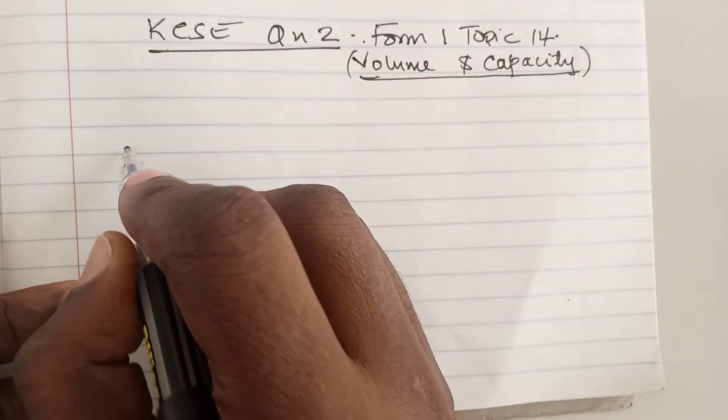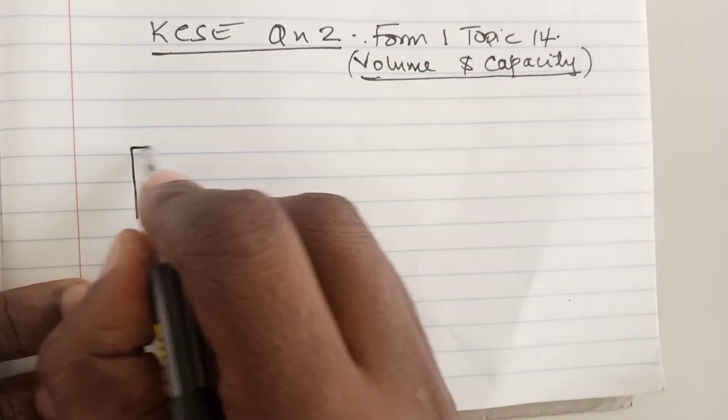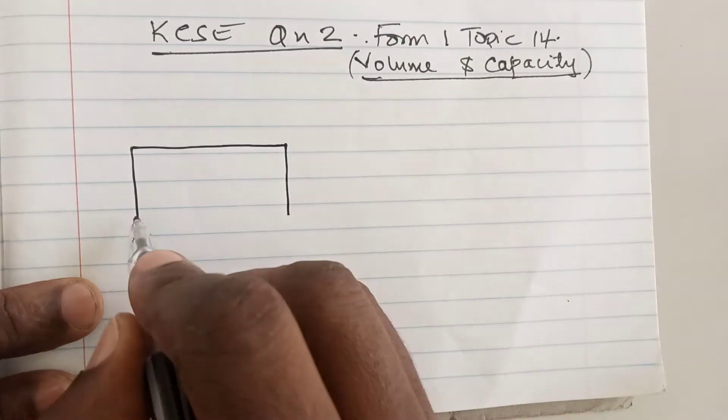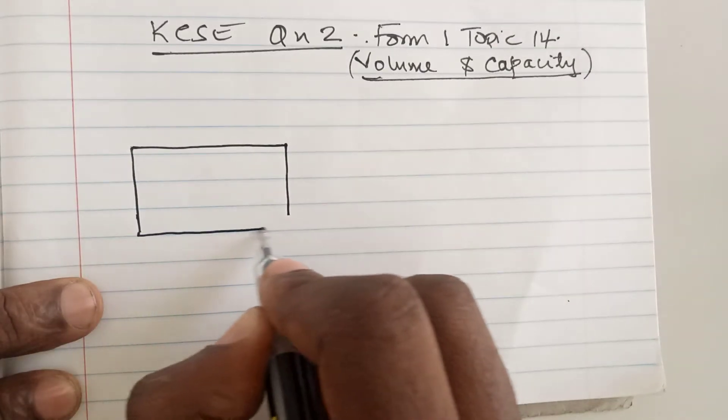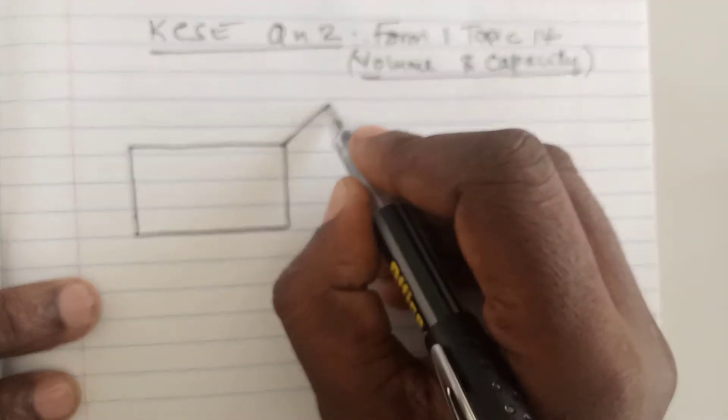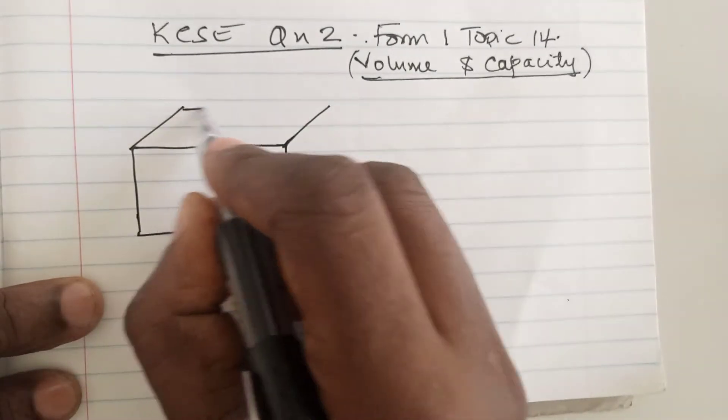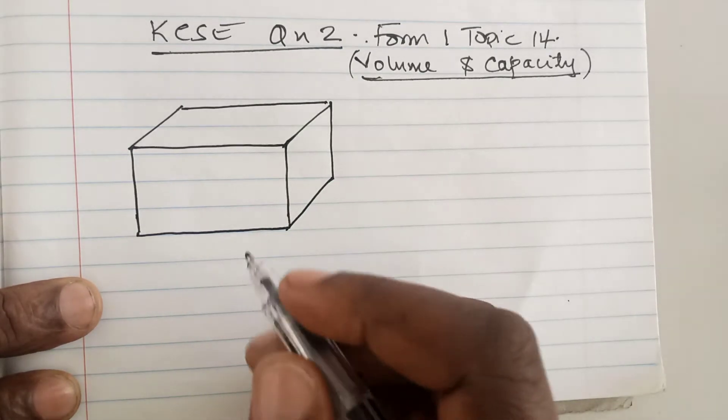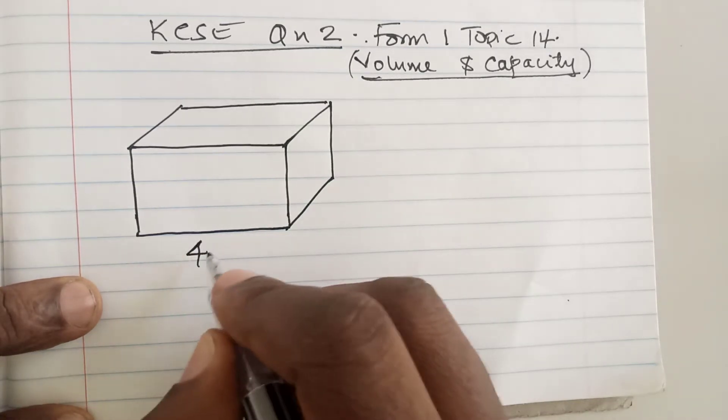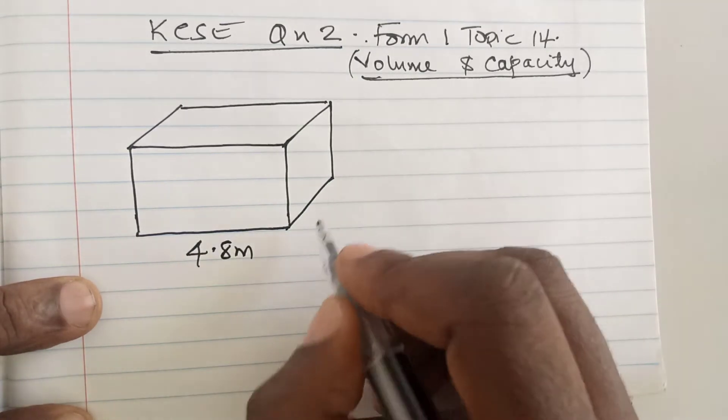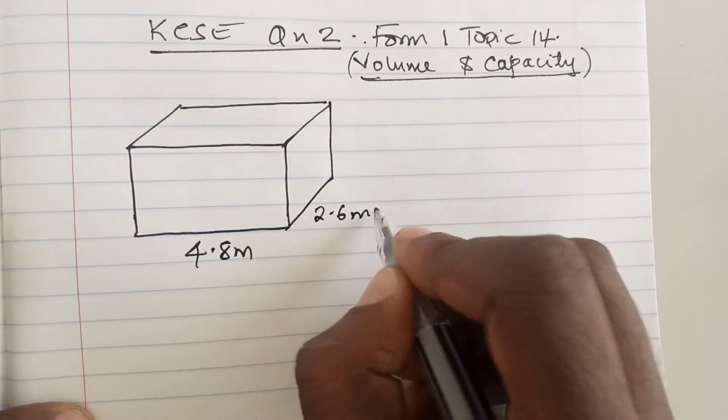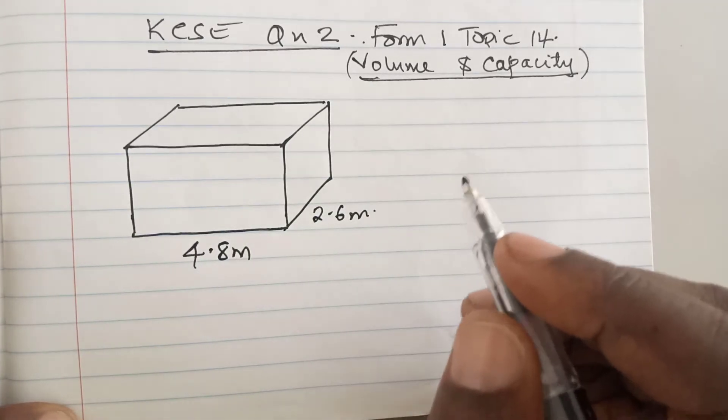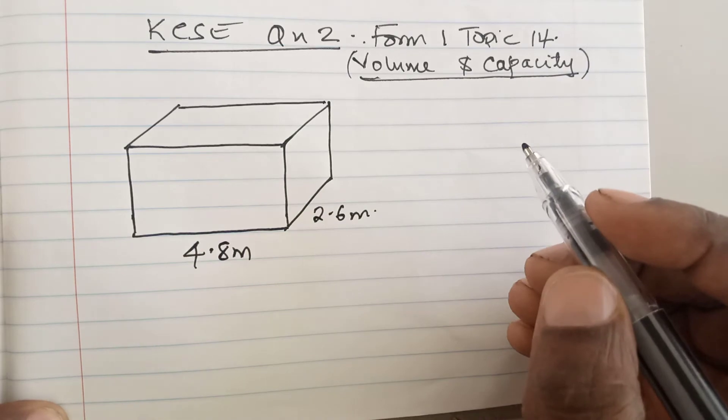We have this rectangular tank. Let us see the rectangular tank. This is the rectangular tank. It has dimensions 4.8 meters, 2.6 meters, and has water to a height of 3.2 meters.